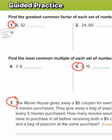For number one, we want to find the greatest common factor. Use the word 'factor' to help you think of a factor tree, which we're going to use to help us find the greatest common factor. So I'm going to make a factor tree of 8 and 32.